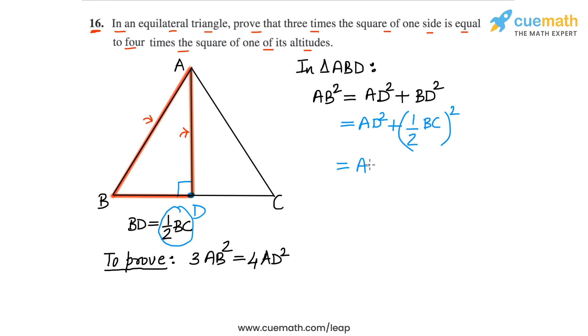And now we can add this as AD square plus 1 fourth of BC square. And now let's make use of the fact that BC is equal to AB because the triangle ABC is equilateral. So instead of BC, we are going to write AB so that we find the relationship between AB and AD.